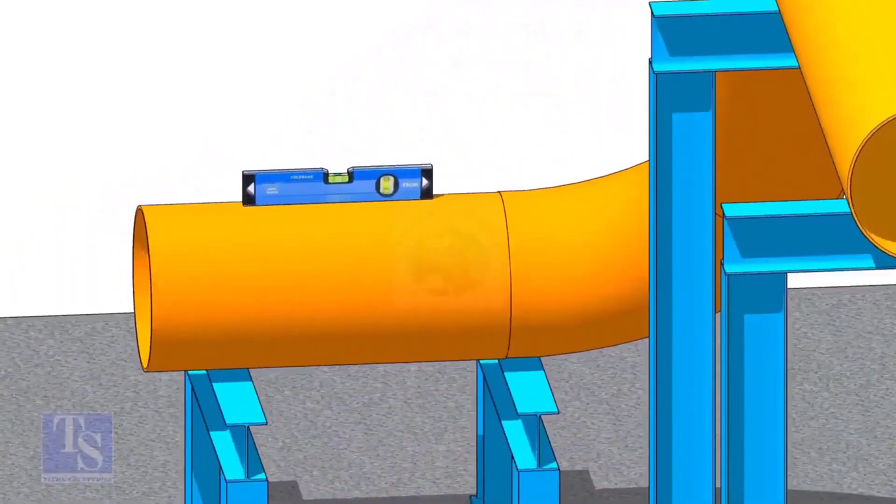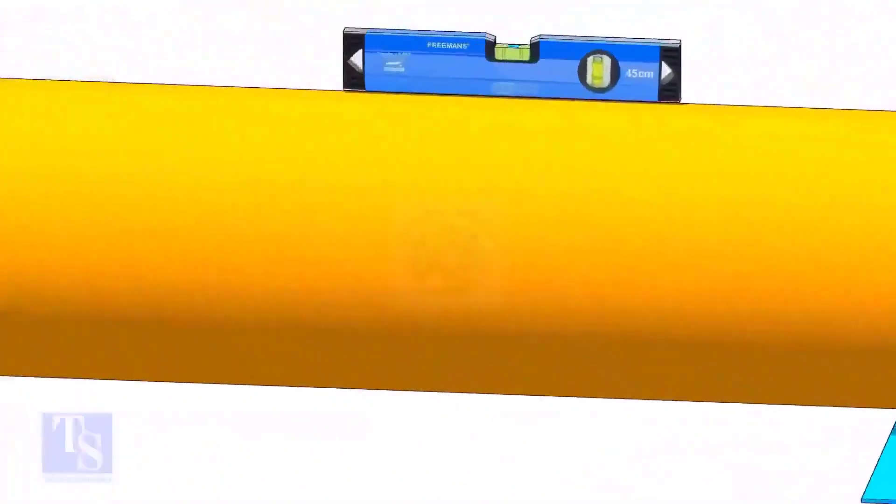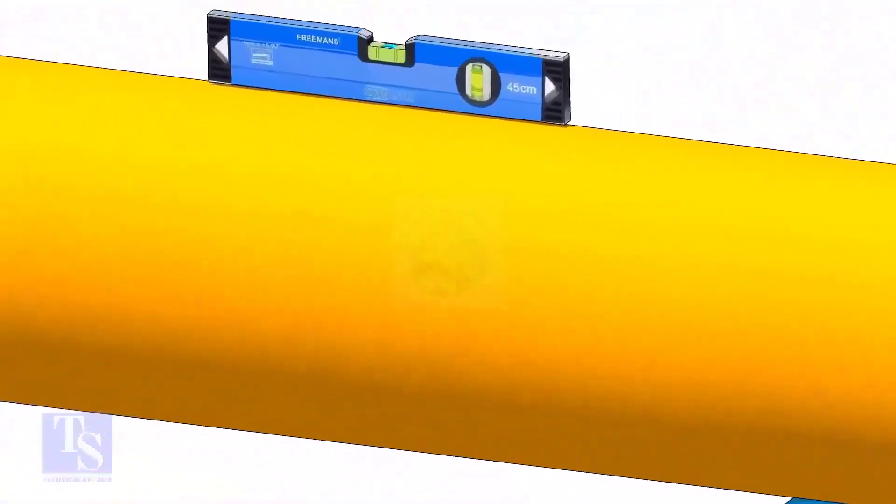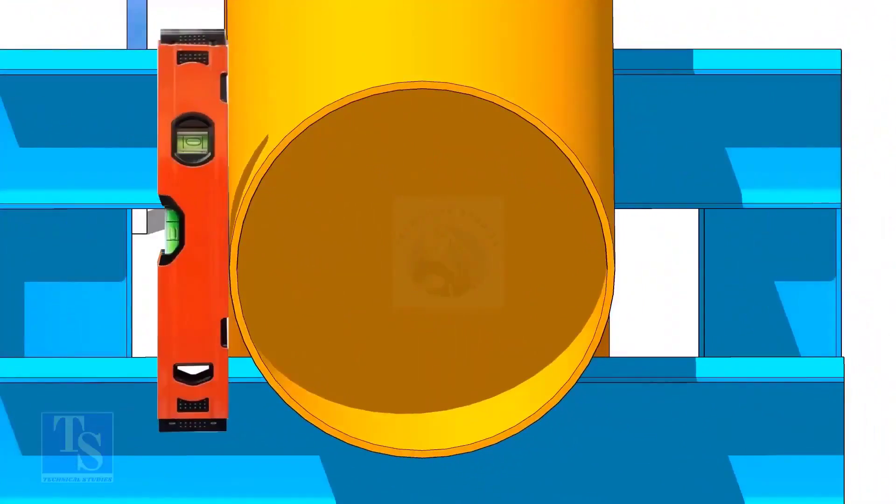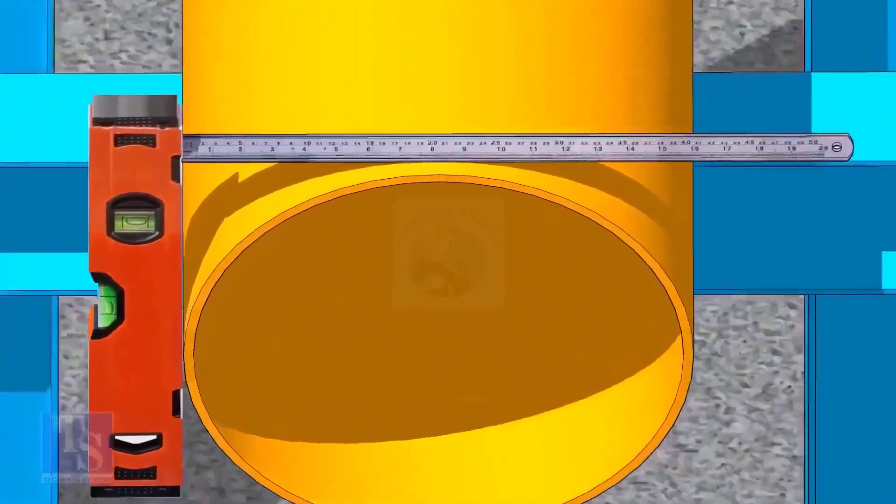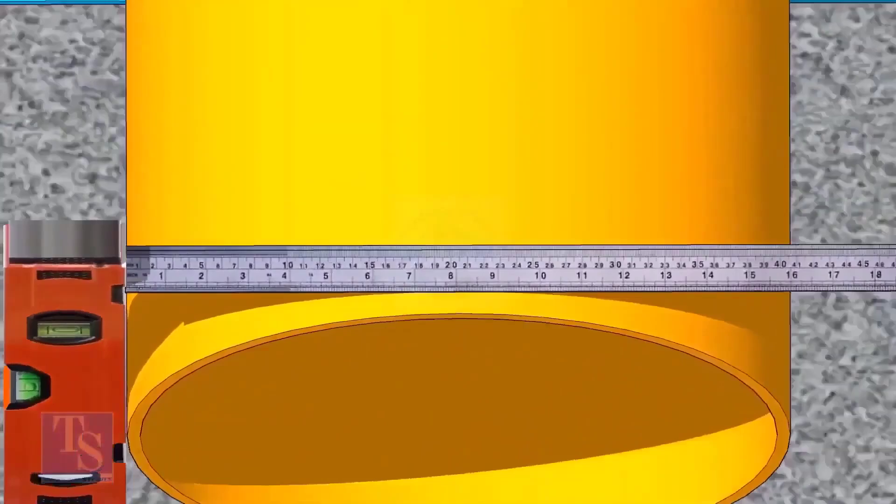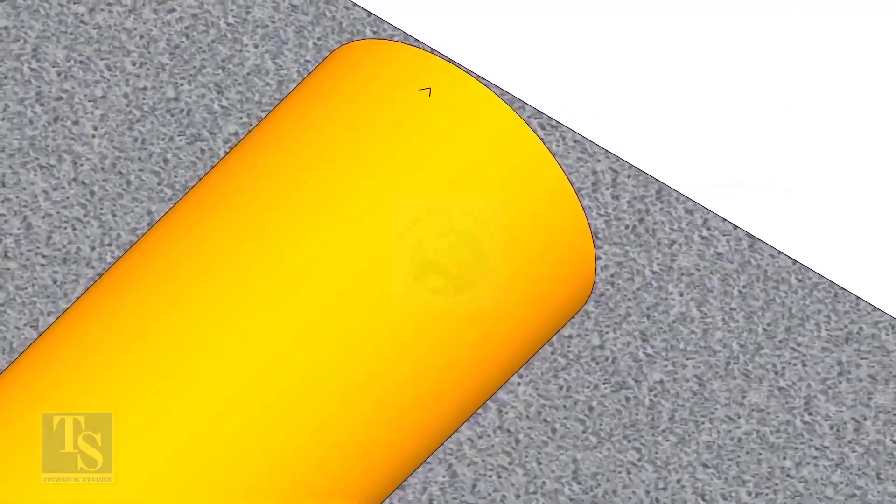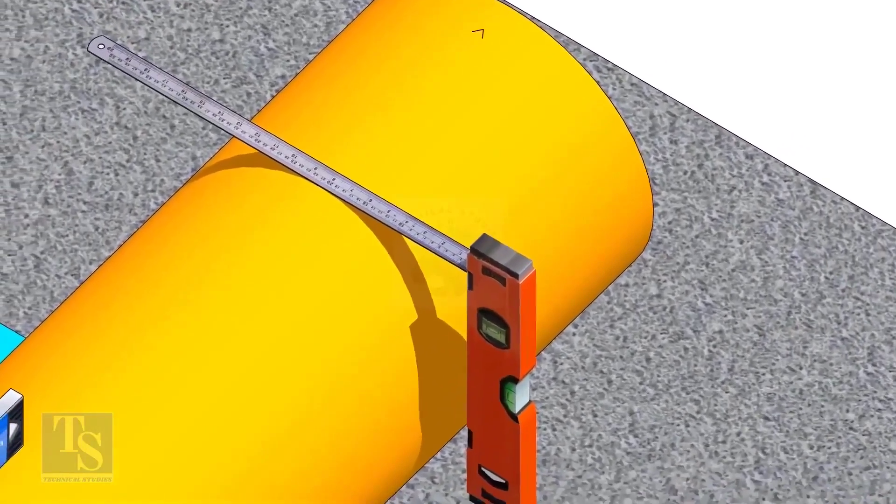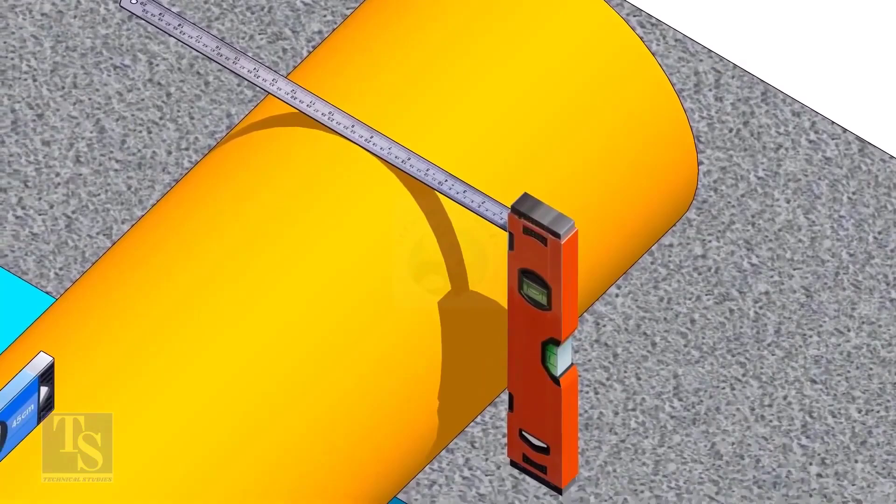After leveling the pipe, mark the center line. Don't forget to punch mark this line. Mark half OD at 300mm apart. This pipe OD is 406mm, so mark 203mm from the vertical level bottle on the top of the pipe. And draw a line connecting these marks.